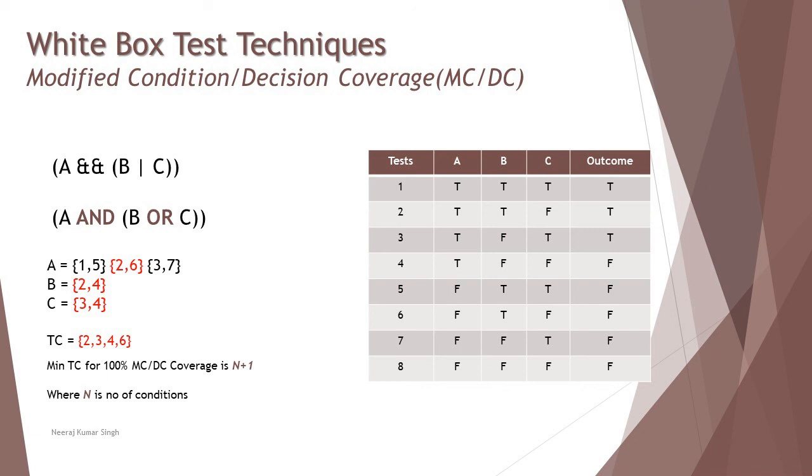And also to add minimum test cases for 100% modified condition decision coverage achieved by n plus one test cases, where n is the number of conditions that is ABC. So three plus one is four. So it's very easy for any individual to find out that what would be the minimum number of test cases required for 100% MCDC coverage. But it becomes quite complicated and difficult when the options are about which test cases to be picked up as four test cases. So you must be able to apply the technique in order to find out the right set of test cases to complete the 100% modified condition decision coverage.